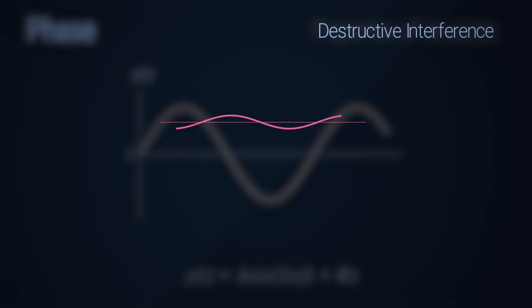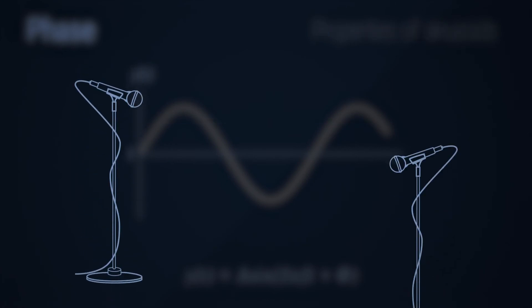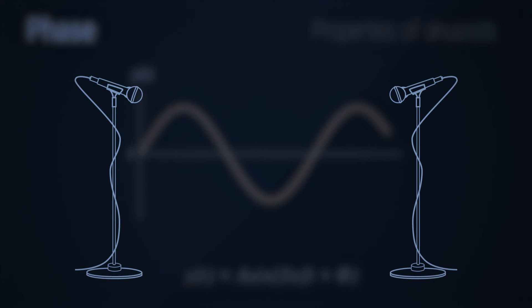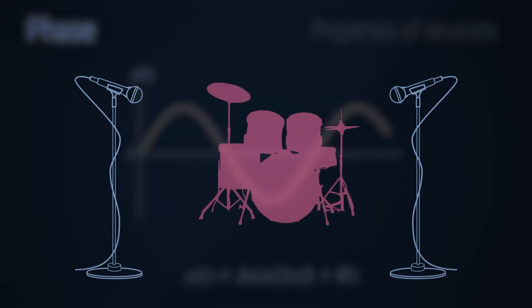When the phase offset is exactly pi radian, there is a total cancellation of the wave. Phase issues are hard to spot for a sound engineer, especially when recording the same source with two or more mics, which are positioned at slightly different distances from the source.